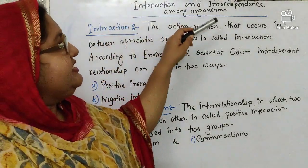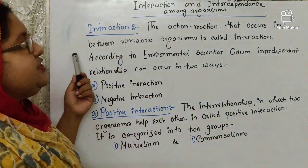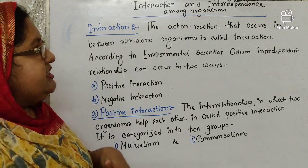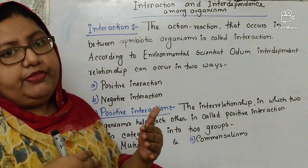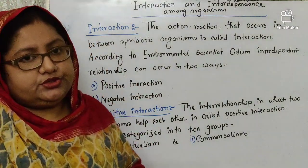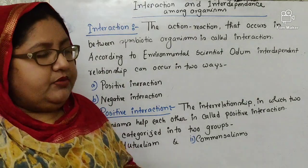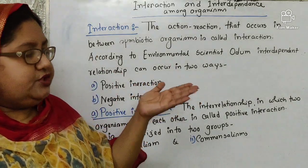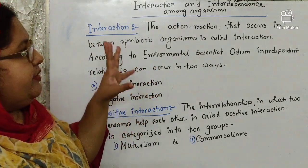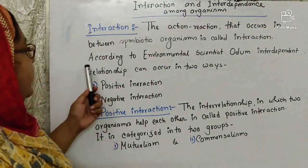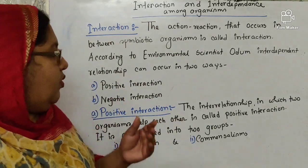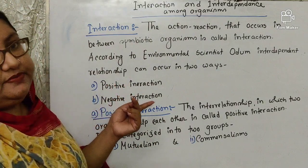Interrelation, interaction and interdependence among organisms. What is interaction? The action-reaction that occurs between symbiotic organisms is called interaction — that means there is some exchange of materials occurring between plants and animals. There are two definitions in your book. You can write any one of them. Now, according to the environmental scientist Odum, interdependent relationships are categorized into two ways: positive interaction and negative interaction.